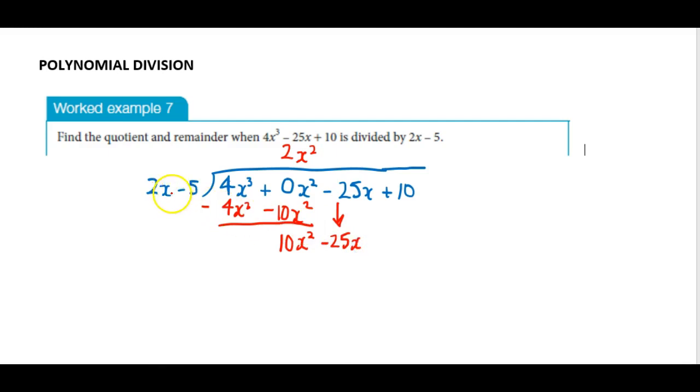Okay, so now we do it again. Same process. A number or term times 2x to give 10x². Will that have to be positive 5x?